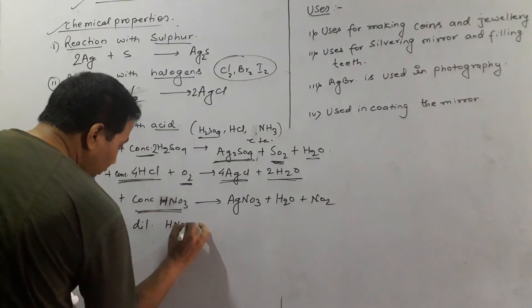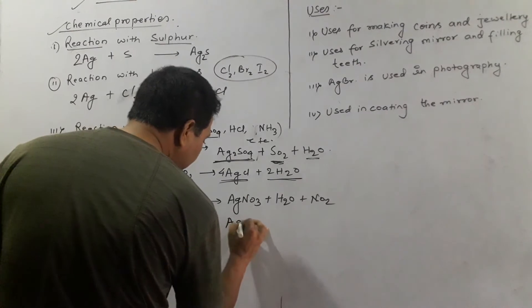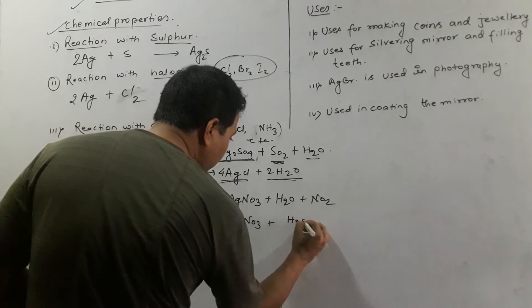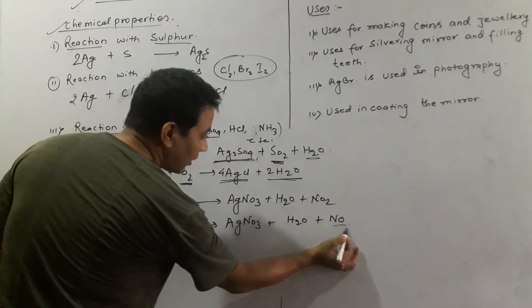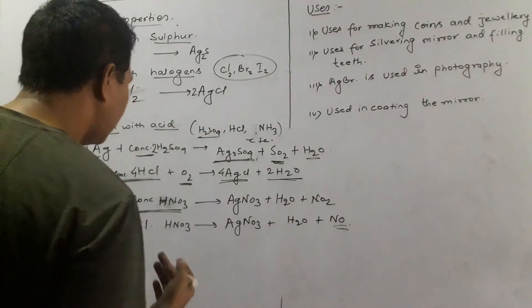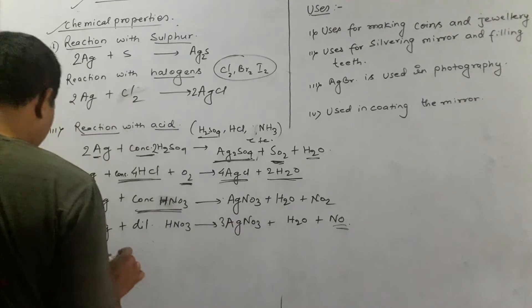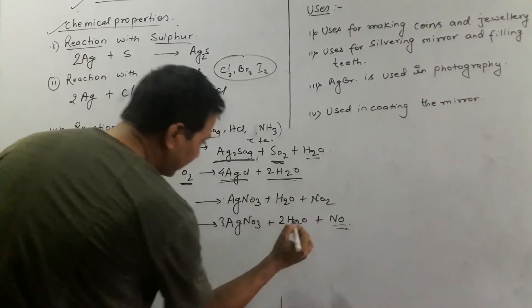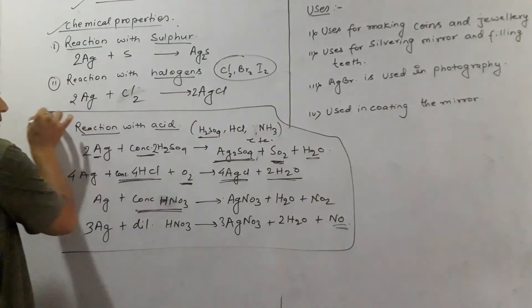When silver reacts with dilute nitric acid, it produces silver nitrate plus nitric oxide (NO) plus water. So the difference between concentrated and dilute nitric acid is that concentrated produces nitrous oxide (N₂O) while dilute produces nitric oxide (NO). These equations need to be balanced accordingly.